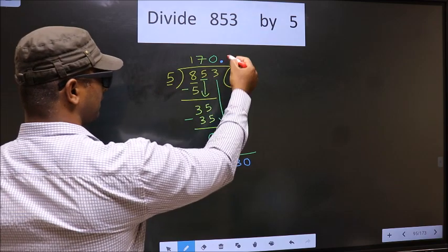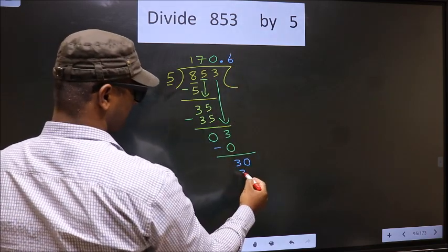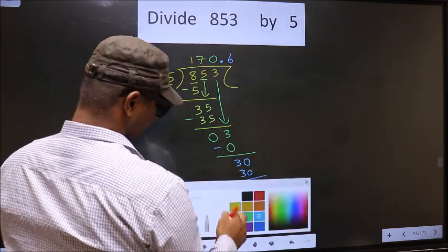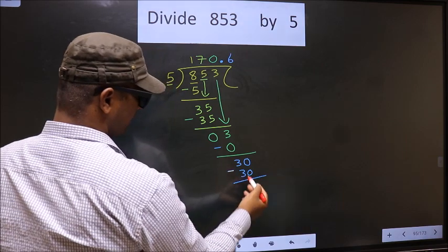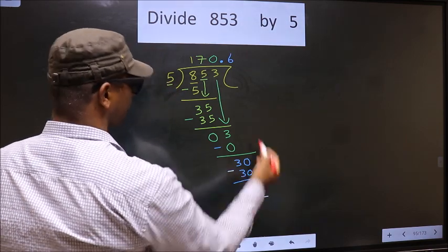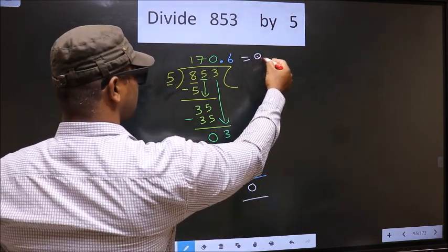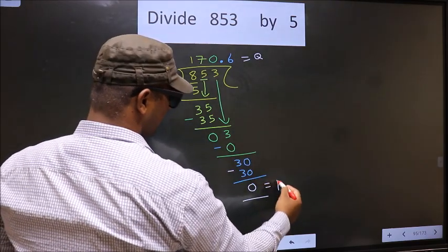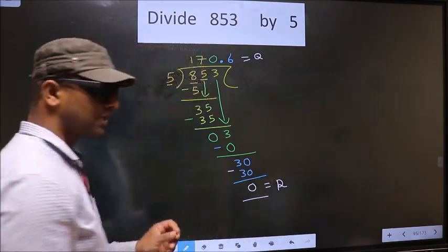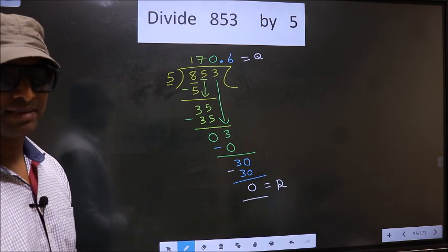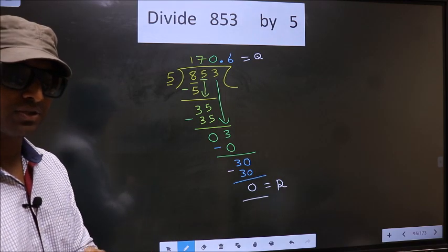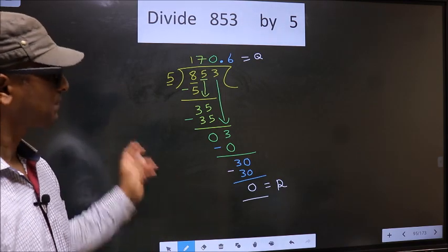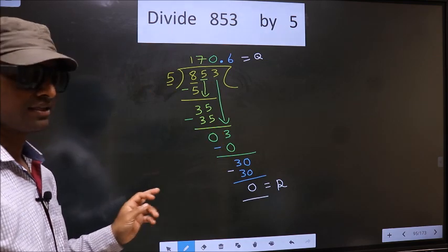Now you subtract: 30 minus 30 is 0. So this is our quotient and this is our remainder. Did you understand where the mistake happens? You should not do that mistake. Am I clear?